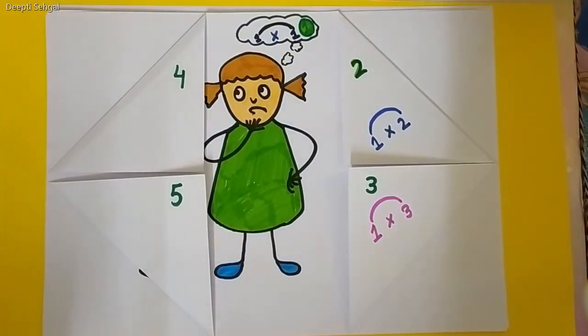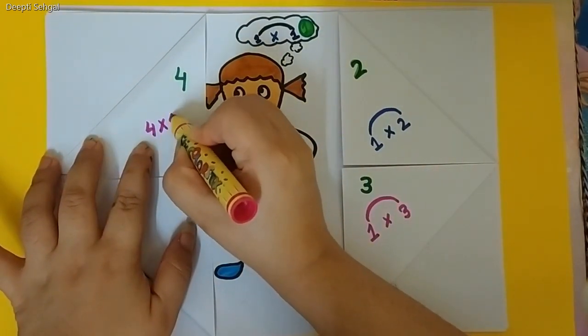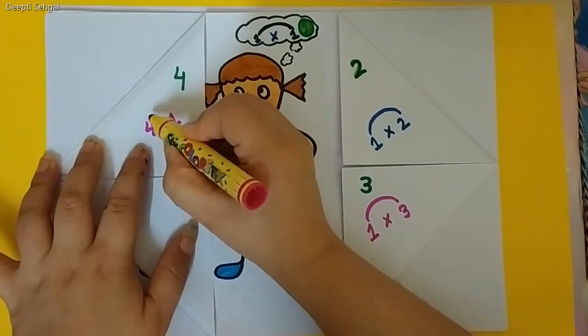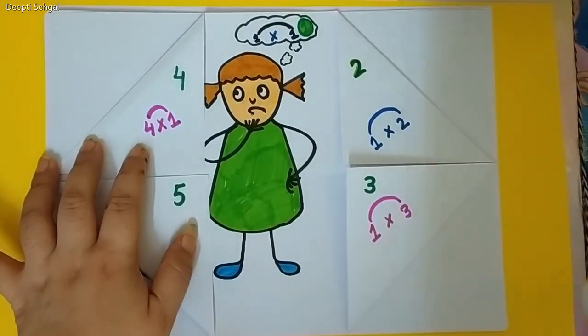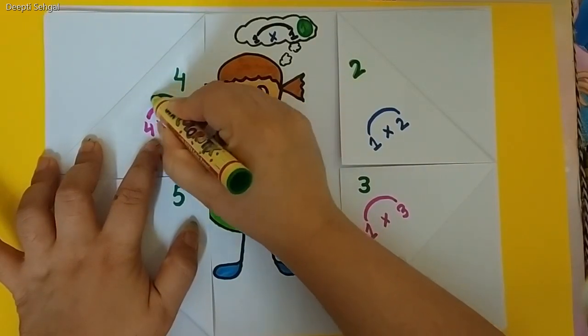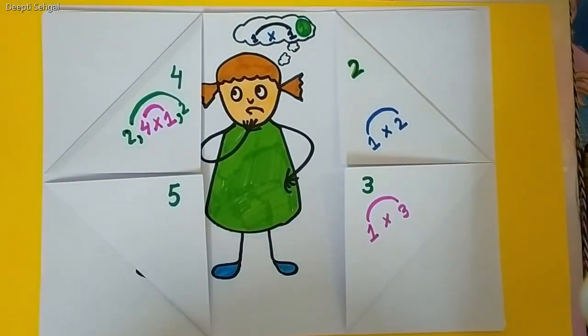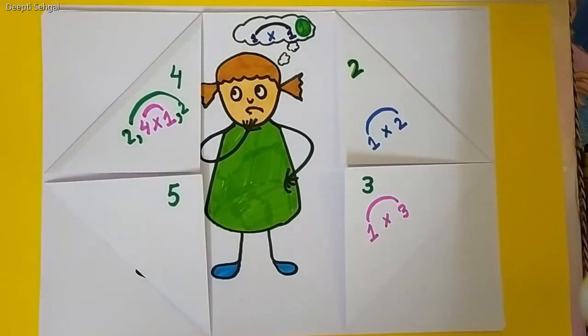Then Chiku thought about the number 4 and she saw that 4 multiply by 1 is 4. So, one color rainbow is there. And then she saw 2 multiply by 2 is also 4. Okay, thank God. So, Chiku quickly went to the ghost and said, The first number is 4. The first colorful number is 4.